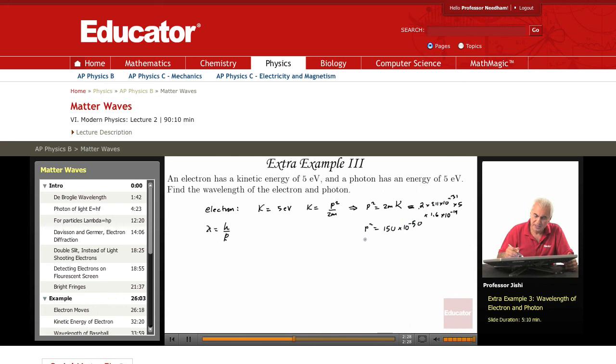So P is the square root of 150 is about 12, about 12, 12 point something. So times 10 to the minus 25 kilogram meter per second. That's P.